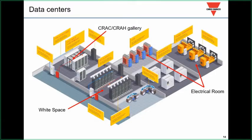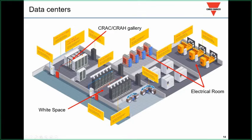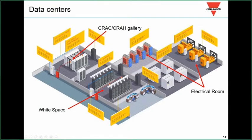A typical data center—they're not all the same, but almost. Much like a beehive where everything surrounds the queen bee, the server banks are the center—this area is known as the white space. Everything around the white space exists to support the uptime of the servers. HVAC systems—some based on hot aisle containment, some on cold aisle—keep the servers cool so they run efficiently, consume less energy, and have fewer failures leading to downtime.